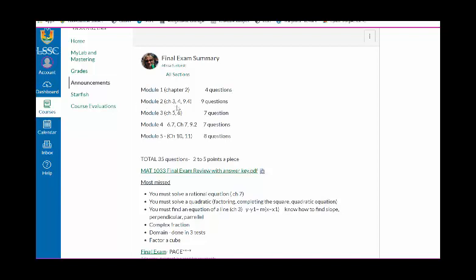Module 2, which was Chapter 3, 4, 9.4, has nine questions. I want to emphasize, a lot of people do not go back and review equations of lines, which is Chapter 4 and Chapter 3. So finding your slope, knowing how to find the equation of line, knowing that you need to have a slope and a point to find an equation of a line.